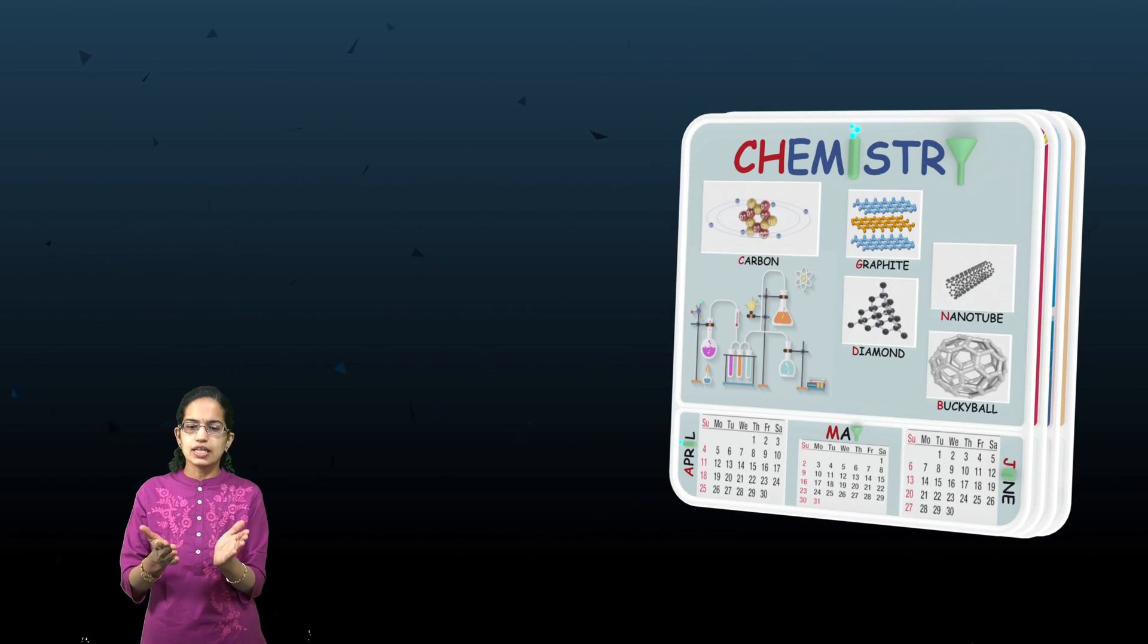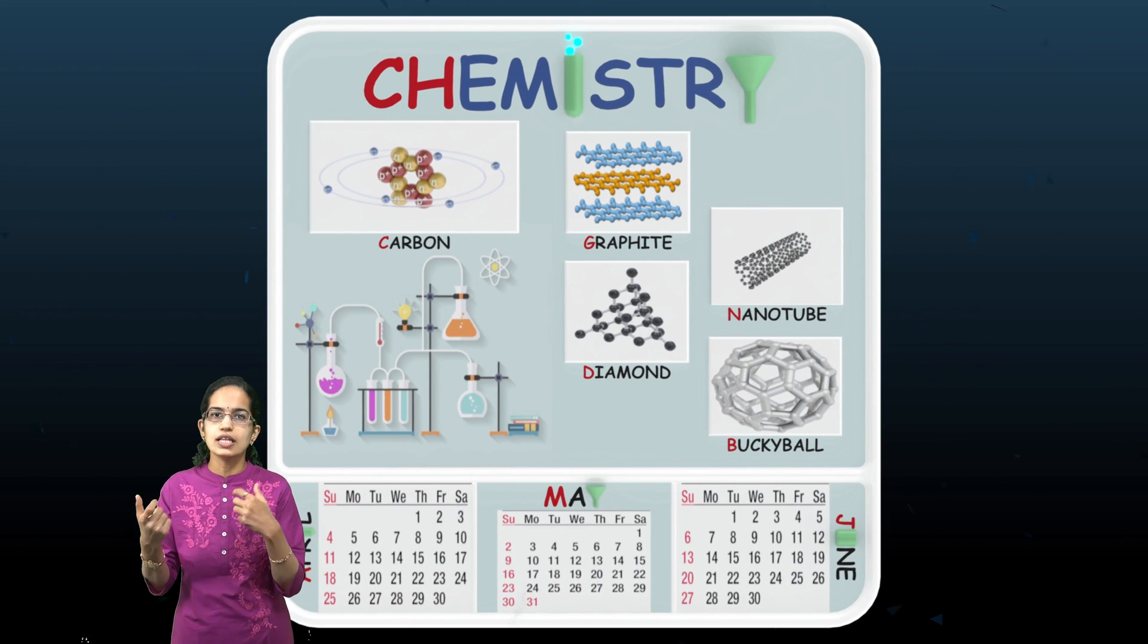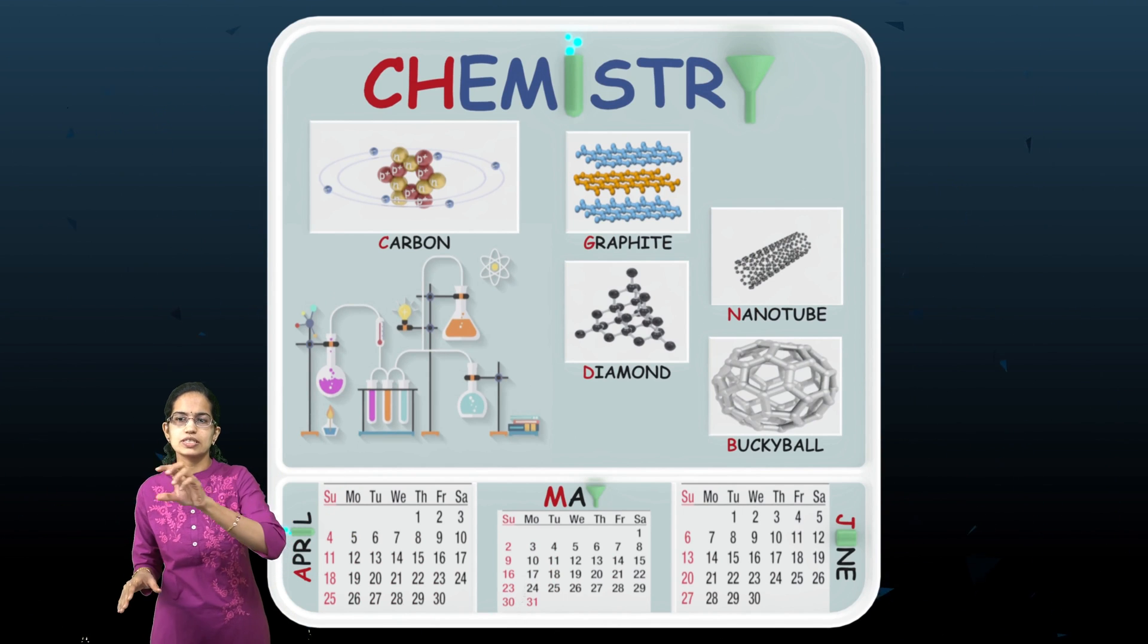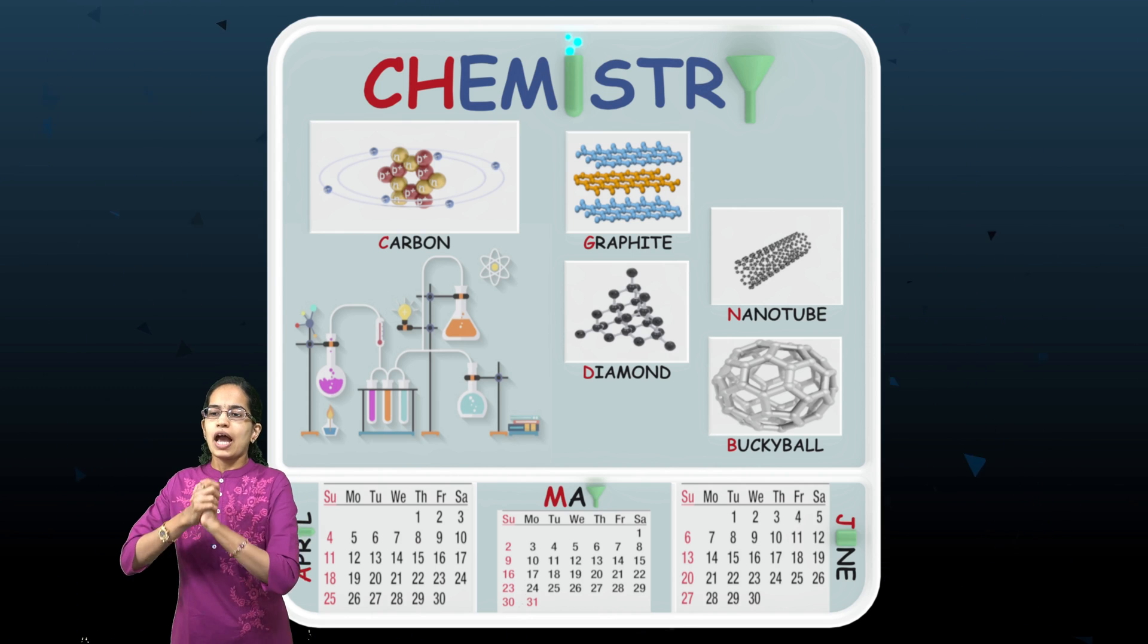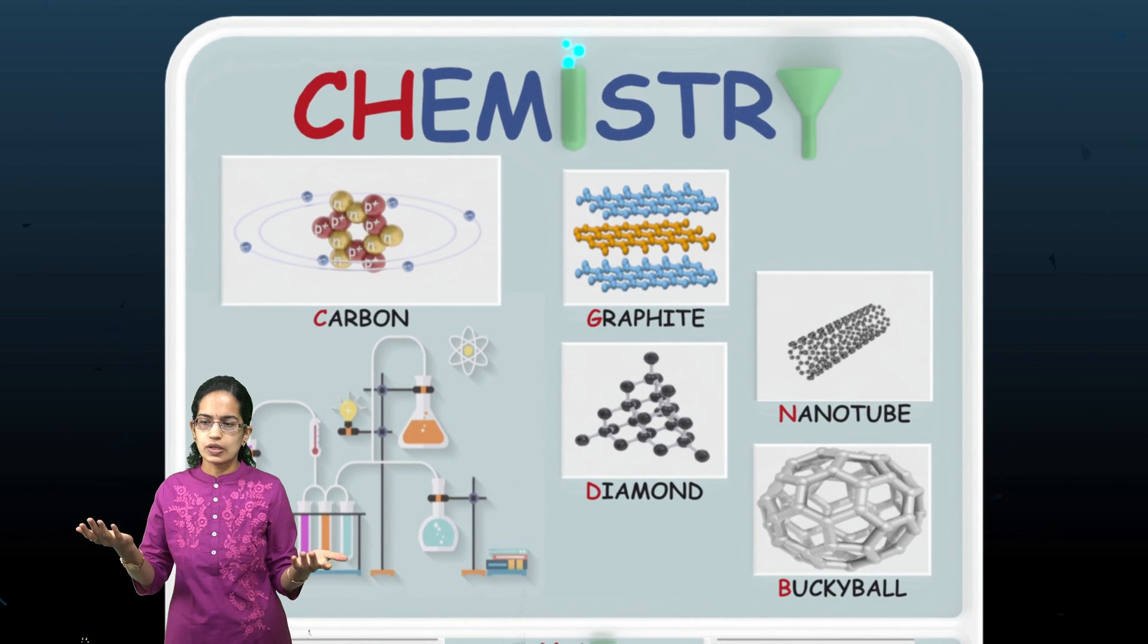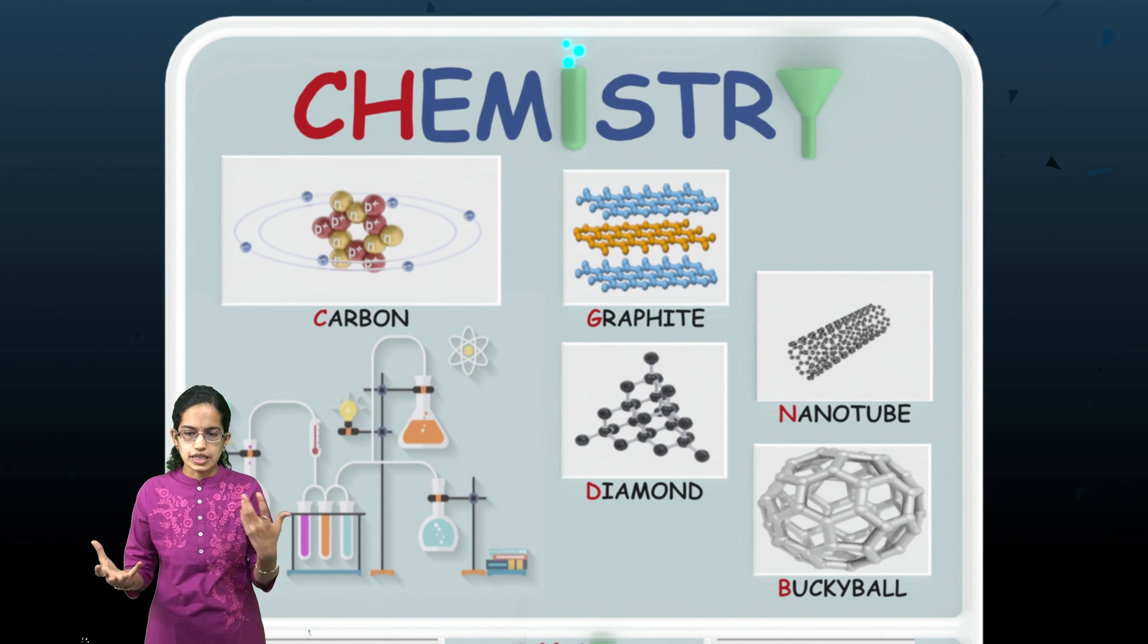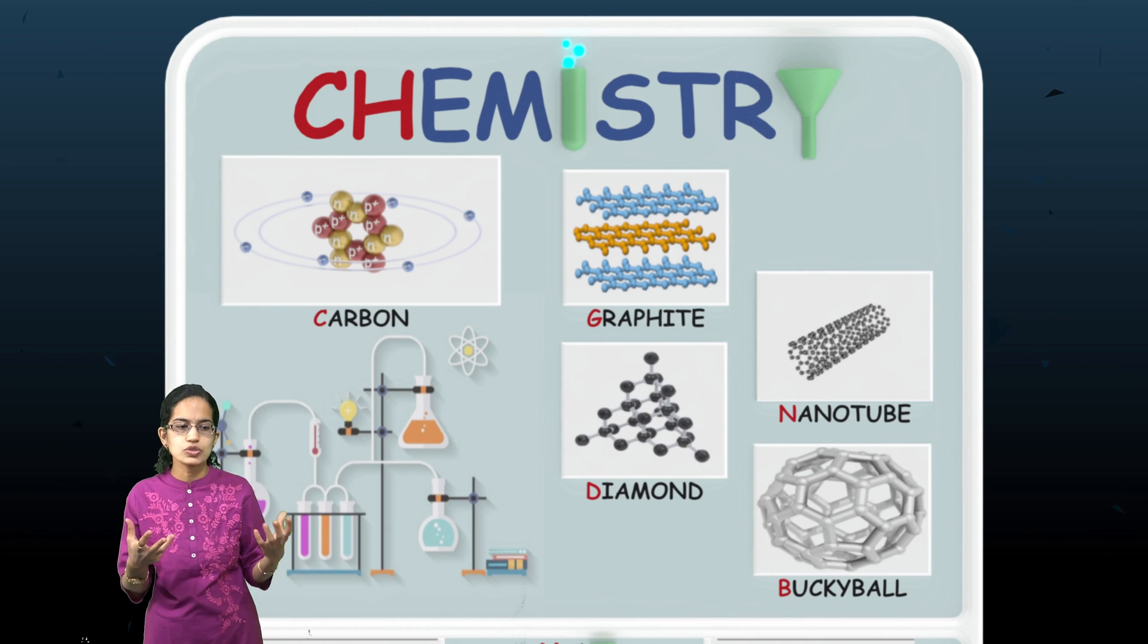In the months of April, May, and June, we have taken a funnel and a beaker as an example. In the chemistry section, we have written chemistry with a beaker and funnel, and we're talking about carbon and its allotropes. We're trying to explain each of the components. What we've done here is simply drawn those.